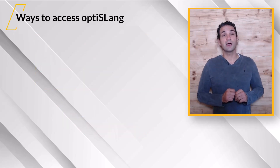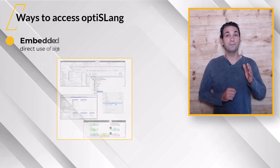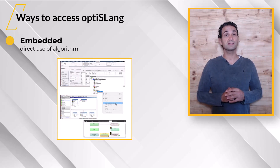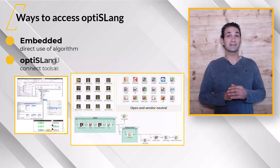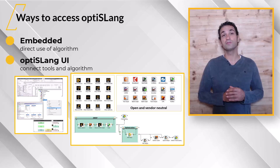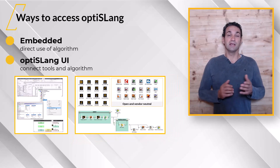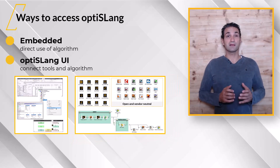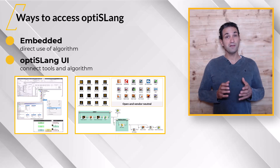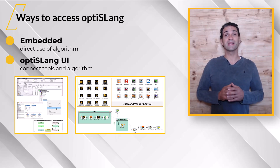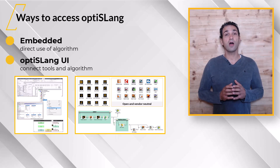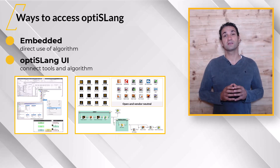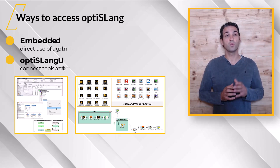There are two ways to access OptiSlang: either embedded in the graphical user interface of various parametric ANSYS platforms, or as a standalone user interface. Since LS-Dyna input files are in simple ASCII format and the solver can easily be started on the command line, there are several options for process integration and design optimization of LS-Dyna simulations with OptiSlang.